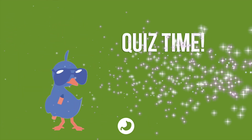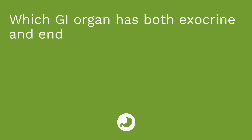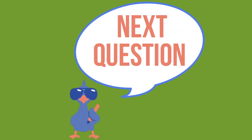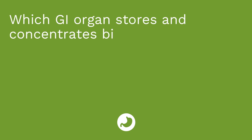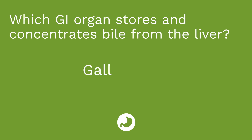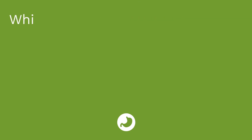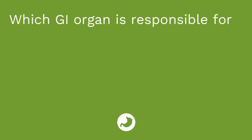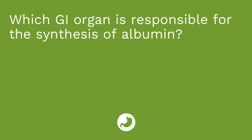All right, it's quiz time. I have three questions for you. First question: which GI organ has both exocrine and endocrine functions? The answer is the pancreas. Question number two: which GI organ stores and concentrates bile from the liver? The answer is the gallbladder. Question number three: which GI organ is responsible for the synthesis of albumin? That would be the liver.